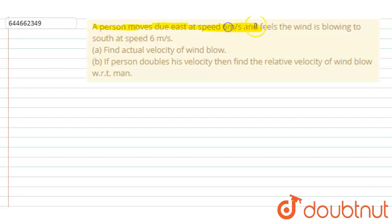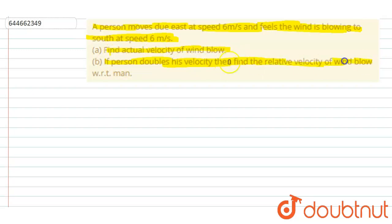Hello everyone. A person moves due east at six meters per second and feels the wind is blowing south at six meters per second. Find the actual velocity of the wind. If the person doubles his speed, find the relative velocity of the wind with respect to the man.